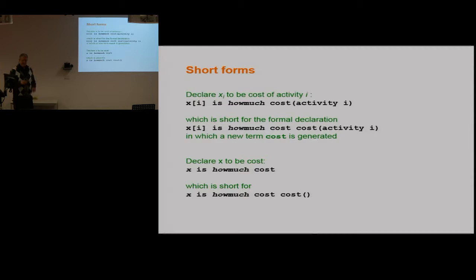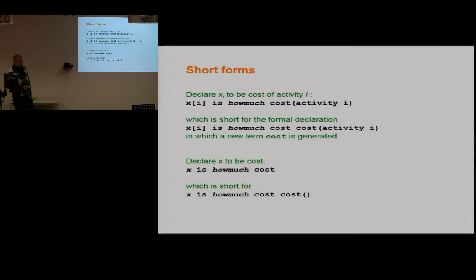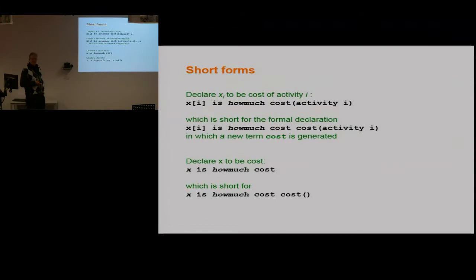For a simple variable like 'xi is the cost of activity i', we use a one-place predicate: 'cost activity i'. Formally, the declaration says 'how much cost, associated with a cost predicate whose terms are cost and activity i'. We have a shorthand for these simple cases. Even more simply, if x is just 'cost' with no index, you formally need a new predicate with no arguments other than the cost term itself. Everything is still associated with a predicate.